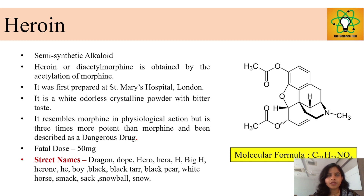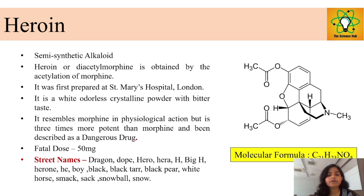Heroin was first prepared by a pharmacist at St. Mary's Hospital, London, who was trying to reduce the potency of morphine but accidentally discovered heroin. It has no medical use. Heroin is a white, odorless crystalline powder with a bitter taste. The fatal dose is 50 mg and it is three times more potent and dangerous than morphine.